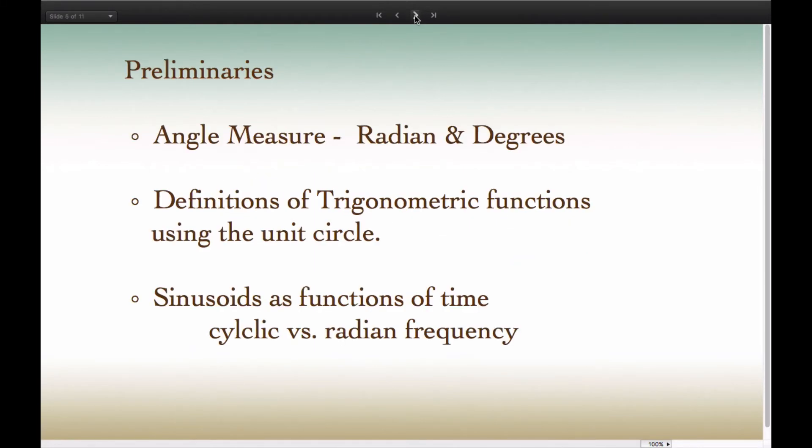Some preliminaries we have to look at before proceeding to trigonometric identities are: we want to define the radian as a measure for angles, we want to look at the definition of trigonometric functions using the unit circle, and finally, we want to look at sinusoids as functions of time and explain the difference in cyclic and radian frequency.